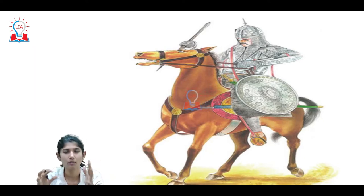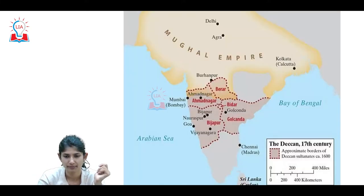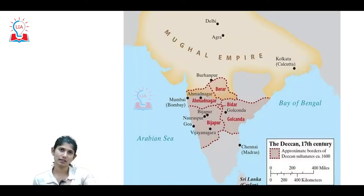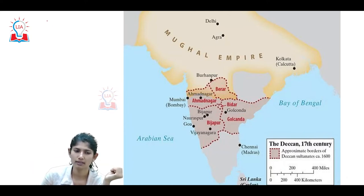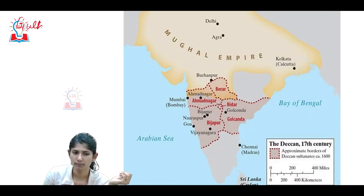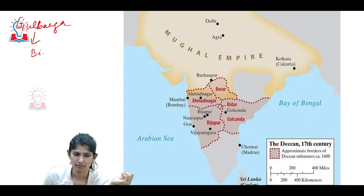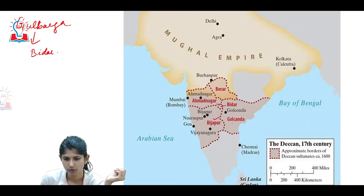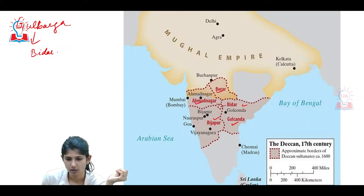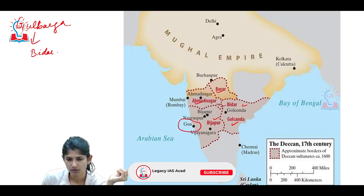Cavalry and horse trade were very important to the Bahamani military. Looking at the Tarafs - by now you know that the first capital of the Bahamani Empire was Gulbarga, and then it moved to Bidar. Other important cities included Bijapur, Golconda, Bidar, Berar, Ahmednagar, and Goa.